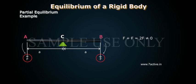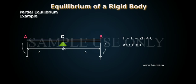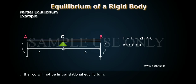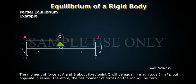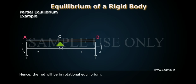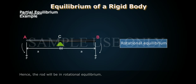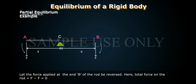In this case, F + F = 2F ≠ 0. Since ΣF̄ ≠ 0, the rod will not be in translational equilibrium. The moment of force at A and B about fixed point C will be equal in magnitude (= AF) but opposite in sense. Therefore, the net moment of forces on the rod will be zero. Hence, the rod will be in rotational equilibrium.